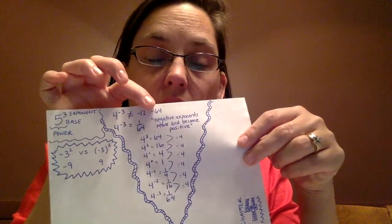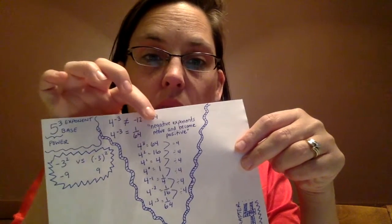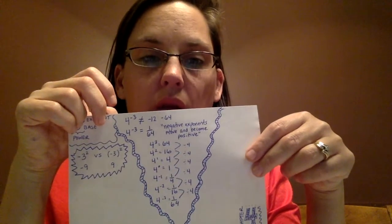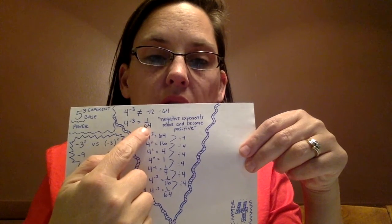The other common mistake is, oh, I'm just going to take 4 to the third power, which is 64, and because it's a negative exponent, I'm just going to plop on a negative to my answer. Again, common mistakes, but not the right answer. 4 to the negative third power is equal to 1 over 64.